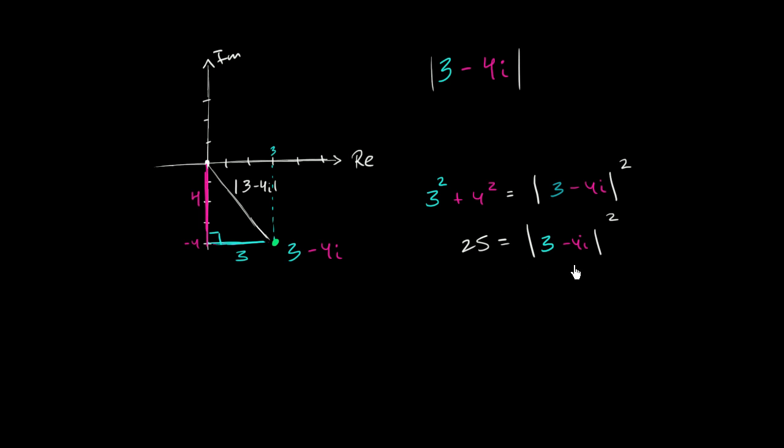We know if you take the absolute value of something, it's just a distance, so it's going to be positive. We want to take the positive square root, the principal square root, of both sides. The principal square root of 25 is 5, which equals the absolute value of 3 minus 4i.